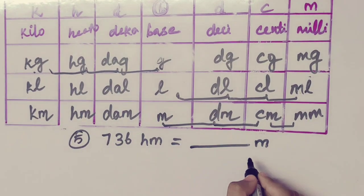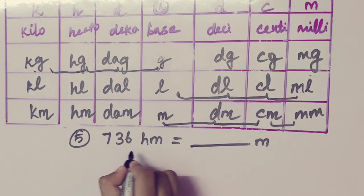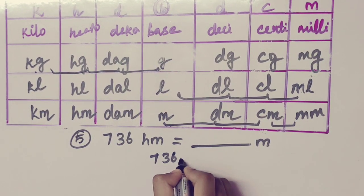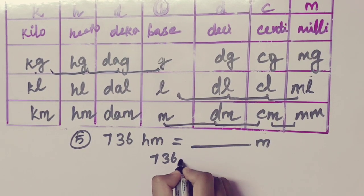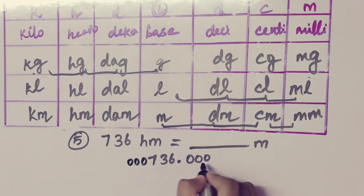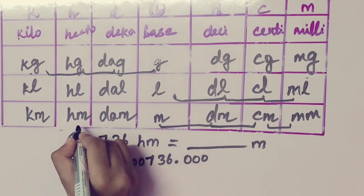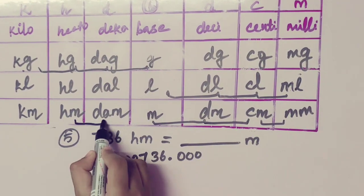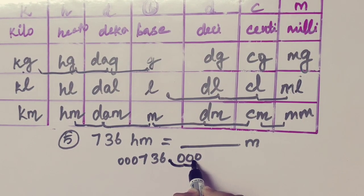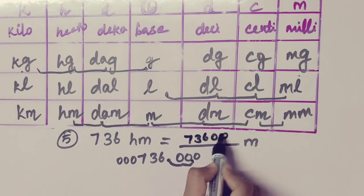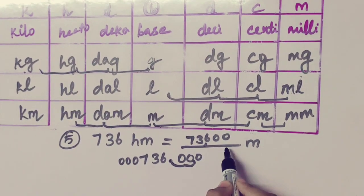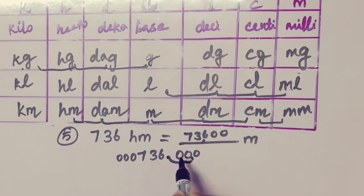736 hectometer equal to dash meter. Hectometer is here, meter is here — two times to the right side. Since there is no decimal point, we add zeroes. So 73,600 meter. 736 hectometer is equal to 73,600 meter. When there's no point value, we take the point and add zeroes — those zeroes carry no value on their own.